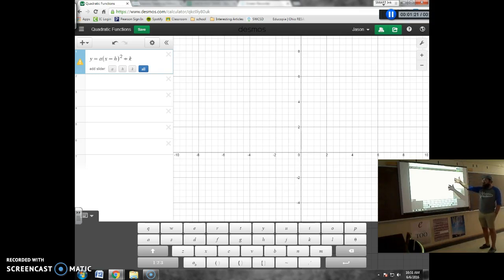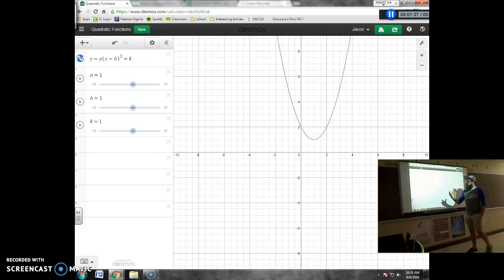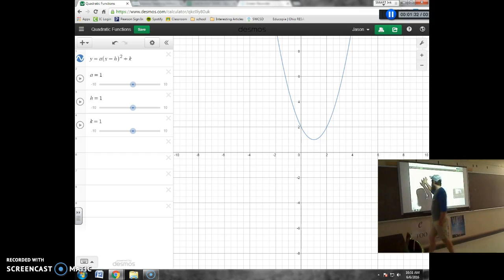And then the last thing we need to do is plus k. And now in Desmos it's going to show you add slider. We want a slider for a, h, and k. Those are values that those numbers can change, but we don't want to put a specific number in there. We want to be able to slide them. Over here we can just slide if we want to see what the a value is going to do to this graph.